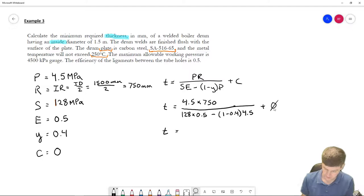Thickness is going to be, and again, do this in a few steps. You wouldn't want to do all that work and then make a mistake punching it into your calculator. 3375 divided by 128 times 0.5, 64 minus 1 minus 0.4, times 4.5, minus 20, or 2.7. I'm going to do that, 2.7. So T is going to be 55.06 millimeters.